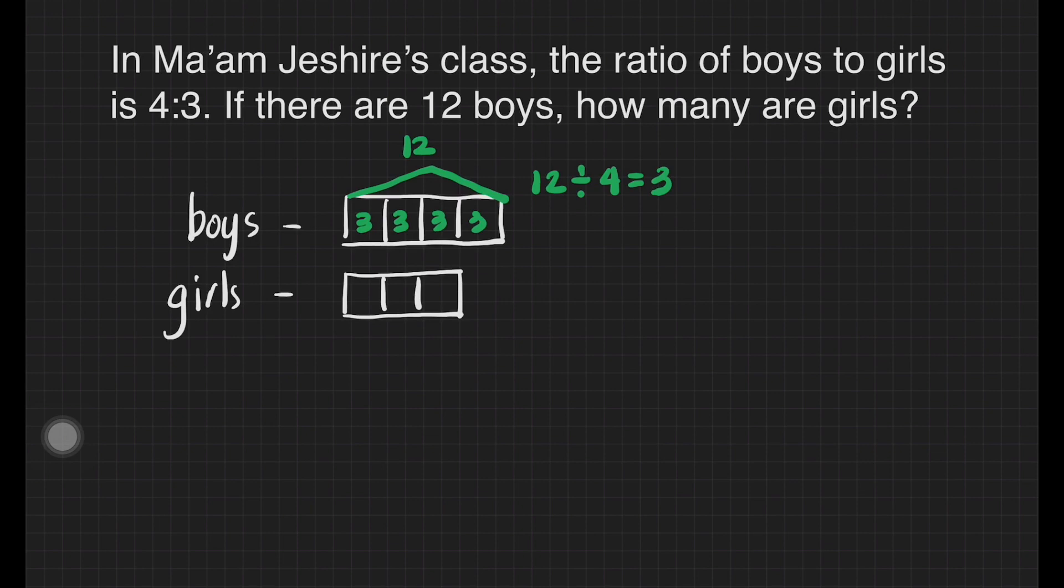Same with the boxes for our girls. We may write 3 in each box, and now we can solve the number of girls in Ma'am Jeshire's class. That will be 3 plus 3 plus 3 equals 9. 9 girls in Ma'am Jeshire's class.